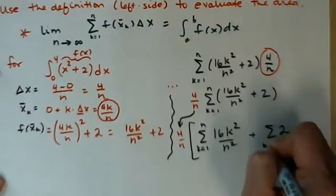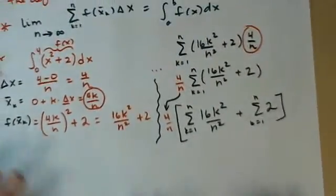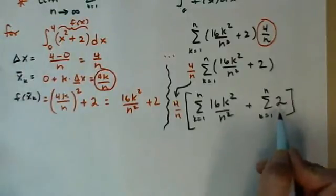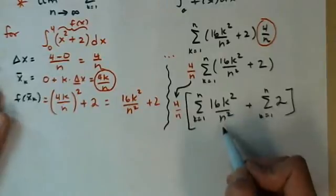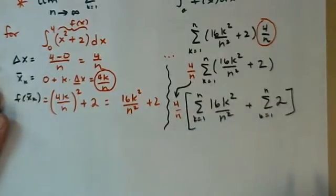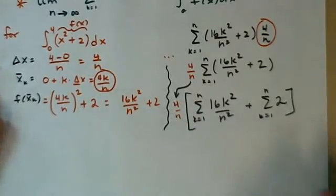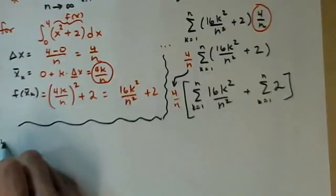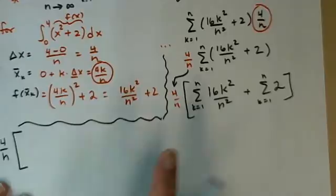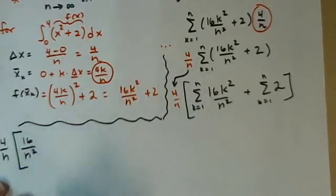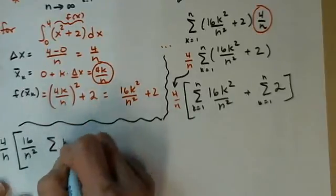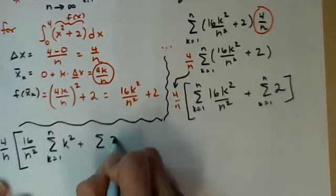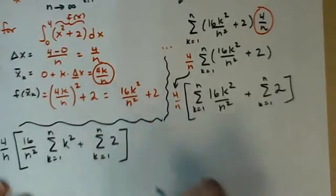So we sum 16k squared over n squared plus the sum of 2. Put in my summation limits. Getting close. Second one, that one we have a formula for. Don't worry, I'm going to bring the card out here in a second. First one, the sum of 16k squared over n squared, I'm going to use my same pull out everything that doesn't change out in front of the sum symbol.